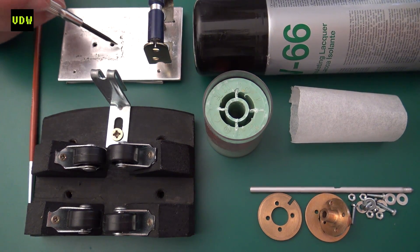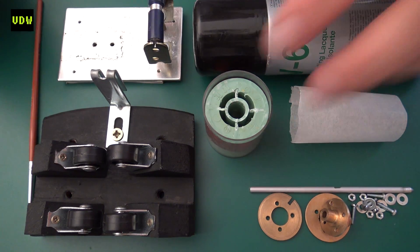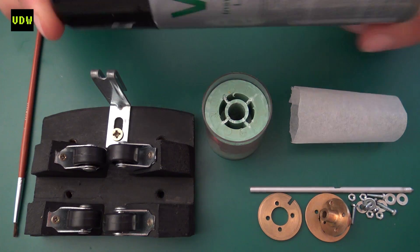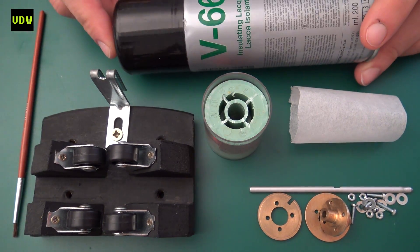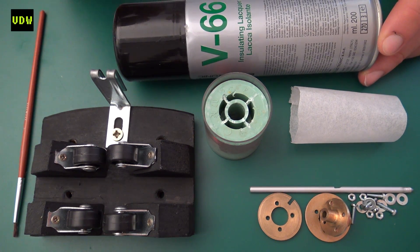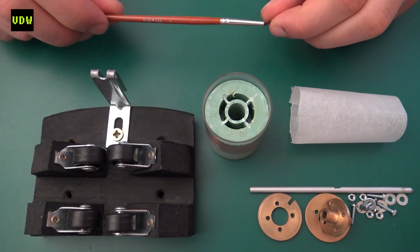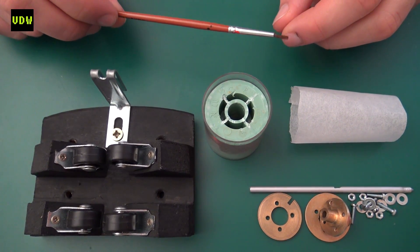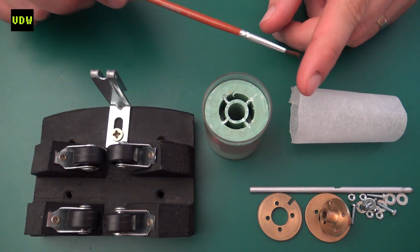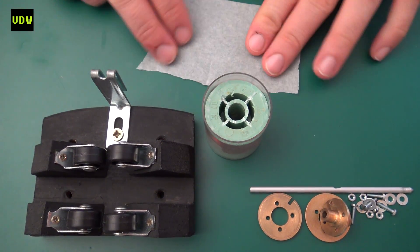We'll start over here. This is the main spool holder which will hold this spool as I unwind it. This is insulating lacquer and I use this to apply to the coil that I'm making just to give it strength so that it holds its shape. This is a brush, a paintbrush, and this is what I use to apply the lacquer to the coil that I'm making.